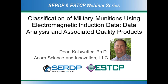It is now my pleasure to introduce Dr. Dean Kieswetter, who is a Chief Scientist and Program Director at Acorn Science and Innovation in Cary, North Carolina. Dean's current research focuses on the development of methods and technologies for the classification of buried munitions and the integration of quality systems and products to the data analysis workflow. Dean earned a BS in geology from Fort Hays State University in Kansas and both Masters and Doctoral degrees in geophysics from Kansas University, plus an MBA from the University of North Carolina at Chapel Hill.